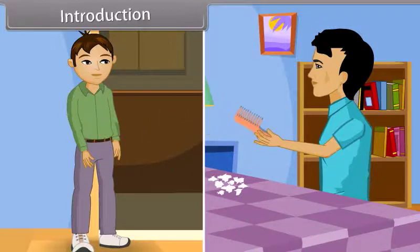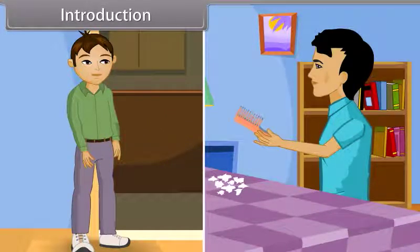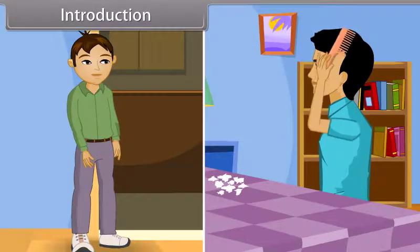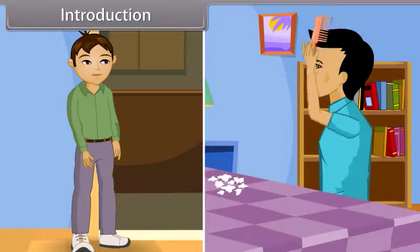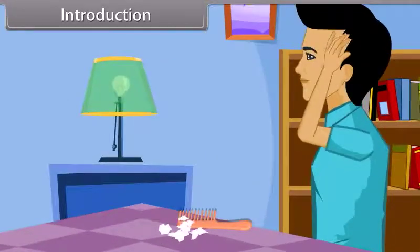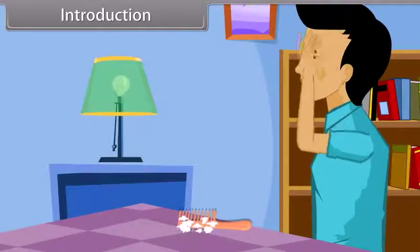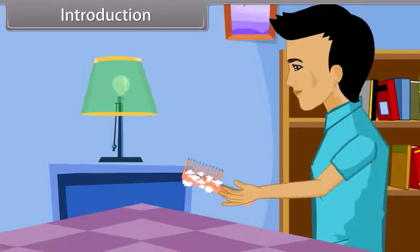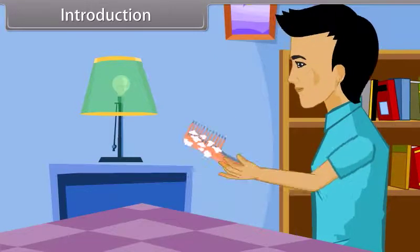Amit and Sanjay are planning to purchase some articles from the market. Sanjay is ready and waiting for Amit, while Amit is combing his hair. After combing, when he puts the comb on the table and again picks it up, he gets surprised.